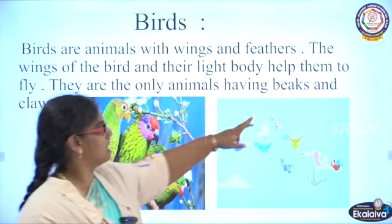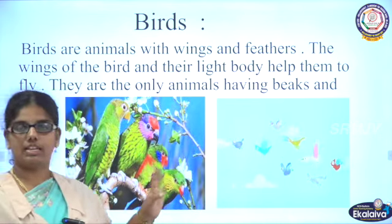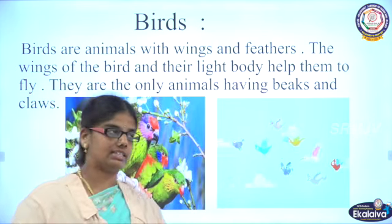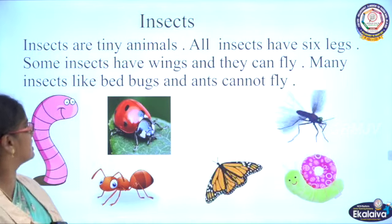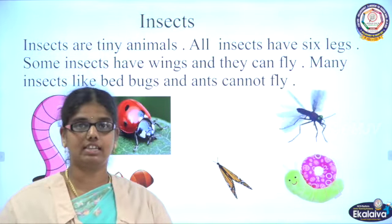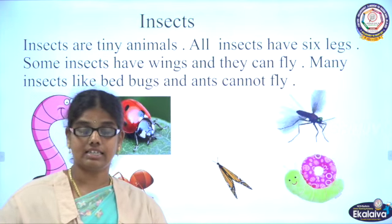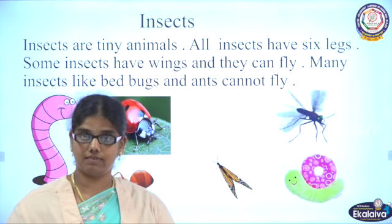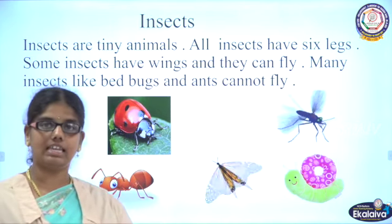Birds have beaks and claws. Only birds have beaks — other animals don't have beaks. Next we are going to see insects. Insects are very tiny animals. Have you all seen in your house cockroaches, ants, mosquitoes, butterflies? All these are very small, tiny animals.